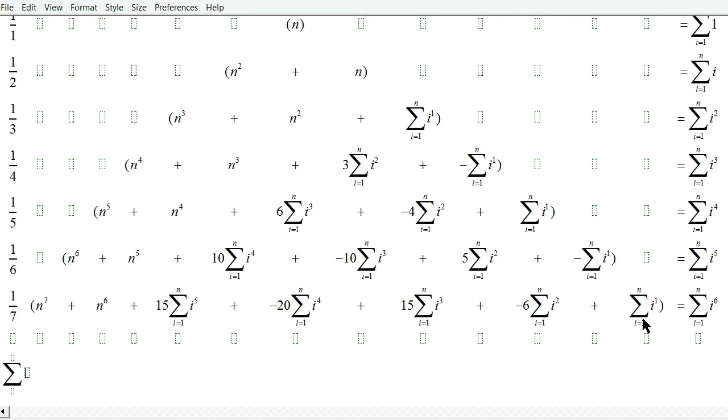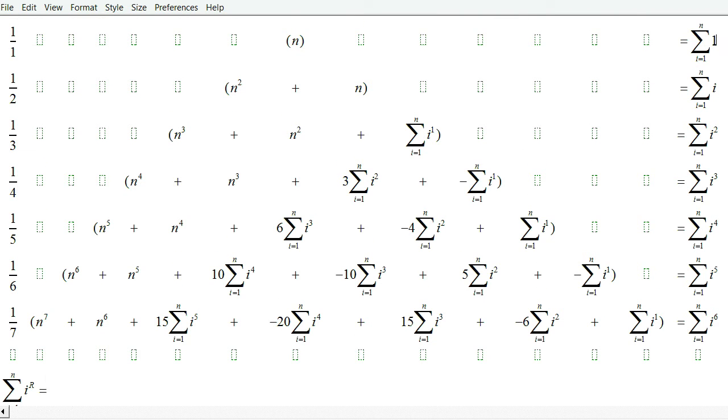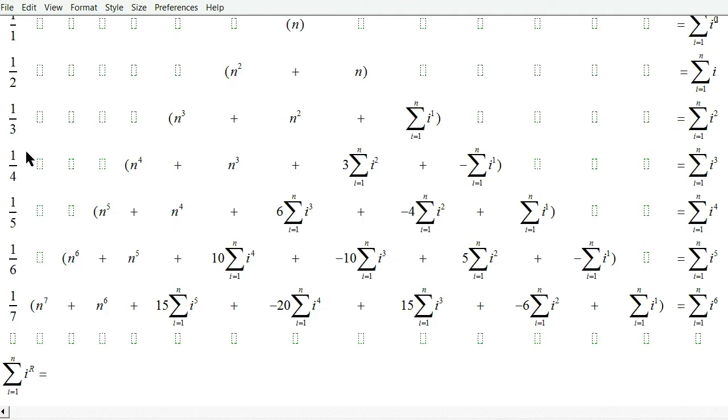So basically what we're saying is the sum of i to the r from i equals 1 to n is equal to, well first let's look, this is sum of i to the 0.